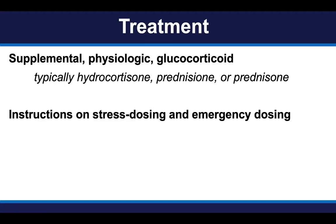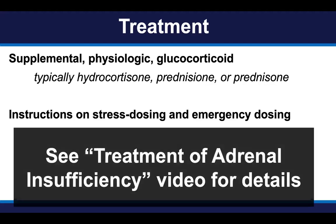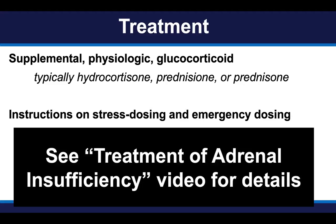The general approach to treatment of secondary adrenal insufficiency: all patients require supplemental, physiologically dosed glucocorticoids, such as hydrocortisone, prednisone, or prednisolone. Patients with secondary adrenal insufficiency typically do not require mineralocorticoid supplementation because they have normal aldosterone production. As always, all patients with adrenal insufficiency require specific instruction on what to do when stressed, ill, or in emergencies — which will be covered in subsequent videos, particularly the detailed video on treatment.